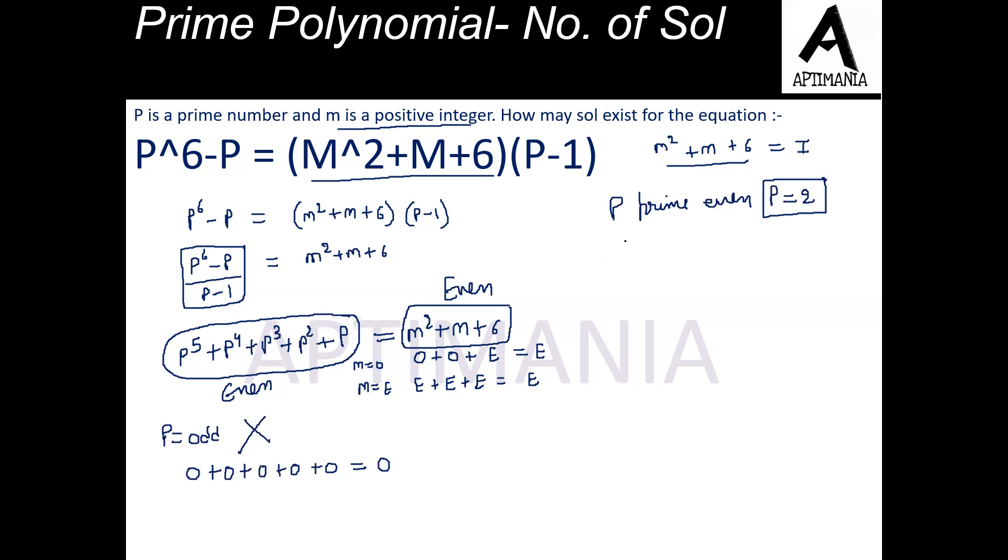What we do? We will substitute the value of P as 2 in this equation. So we will get 2^5 + 2^4 + 2^3 + 2^2 + 2. And this must be equal to M² + M + 6.